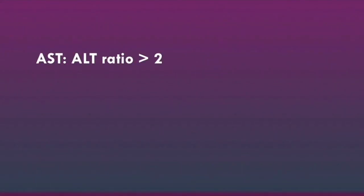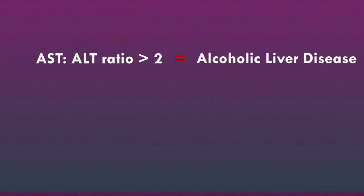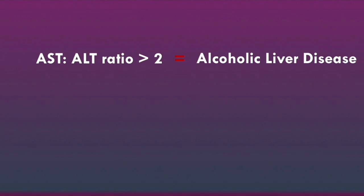An AST to ALT ratio of greater than 2 is highly suggestive of alcoholic liver disease. In alcoholic liver disease, AST generally increases much more compared to ALT, though both enzymes will typically be elevated due to liver damage. There are many proposed mechanisms to explain this, but the key point is that the ratio is typically greater than 2.